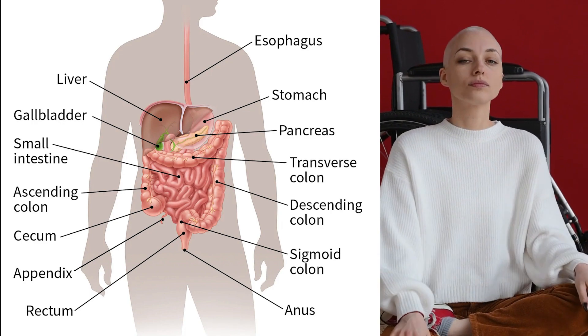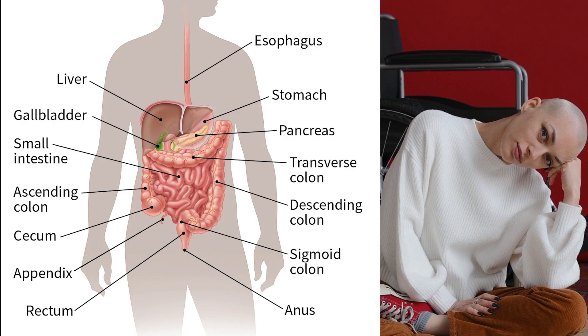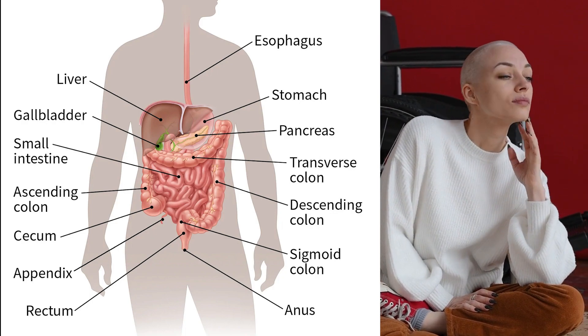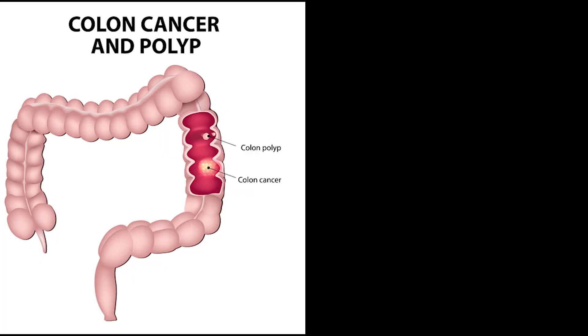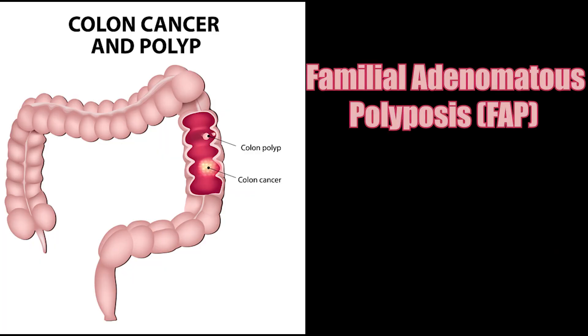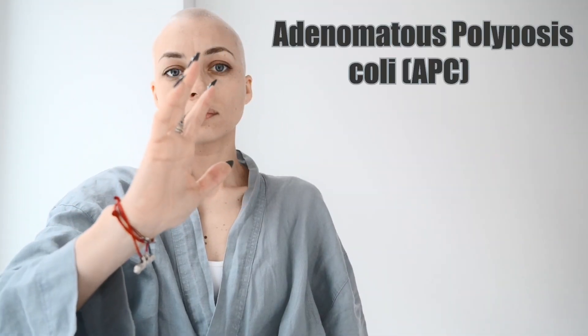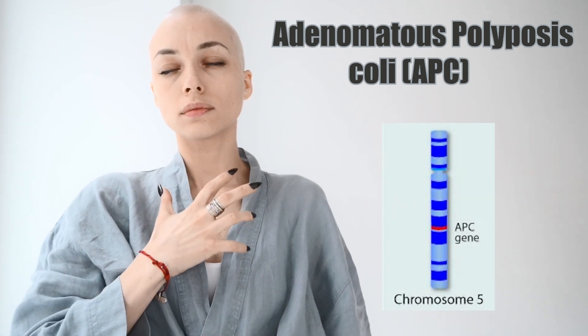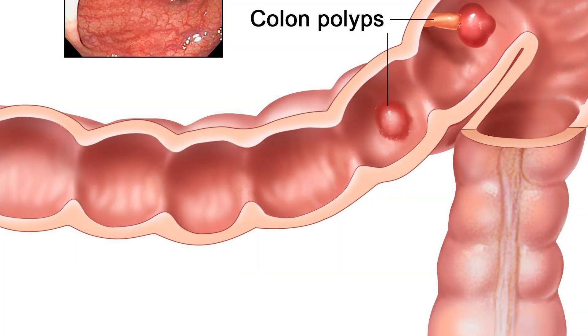Individuals with a family history of colon cancer face a higher risk of developing the disease, particularly if a relative was diagnosed before the age of 50. Those in such families are considered high risk due to the possible inheritance of two rare genetic conditions: familial adenomatous polyposis (FAP) and hereditary non-polyposis colon cancer (HNPCC). FAP results from mutations in the APC (adenomatous polyposis coli) gene on chromosome 5, which functions as a tumor suppressor gene controlling cell growth. People inheriting a mutated APC gene develop growths called polyps in their colon.